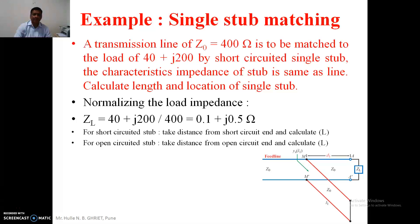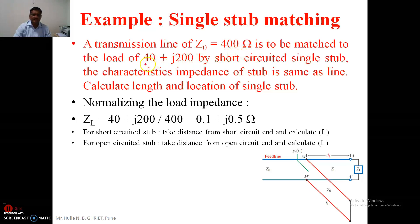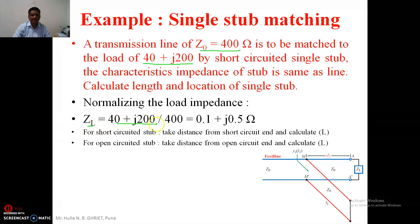In this particular video we will try to understand the single stub match. The transmission line terminated by an improper load is given, and the load impedance is 75 plus j200. The characteristic impedance of the transmission line is 400 ohm. The normalized value is obtained by dividing by the characteristic impedance, which is required for working on the Smith chart.